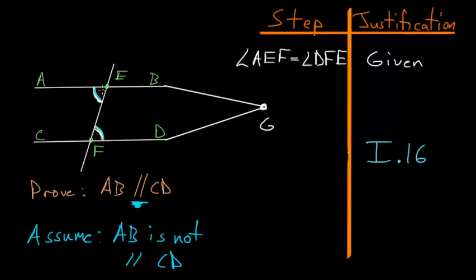So in other words, this angle here AEF would have to be bigger than this angle here, DFE. So let's write that, that the angle AEF would have to be bigger than the angle DFE. Though we already know that the angle AEF is equal to the angle DFE, since that's what we started with. So this angle can't be both equal to DFE and bigger than it, so that's a logical contradiction.